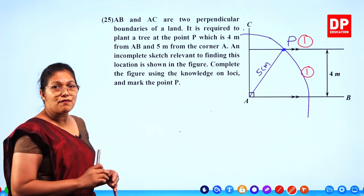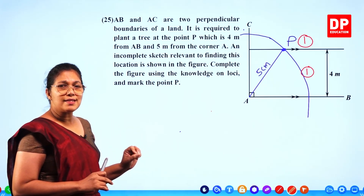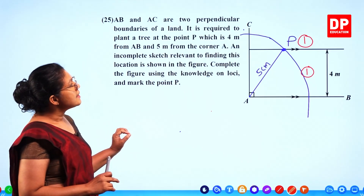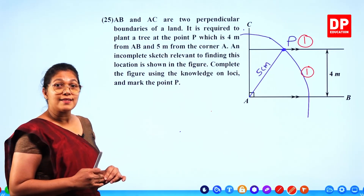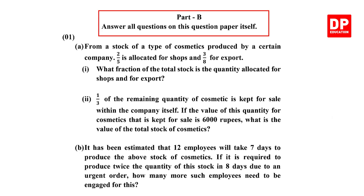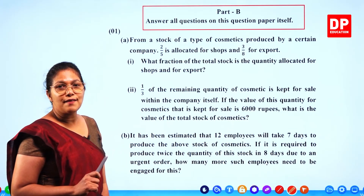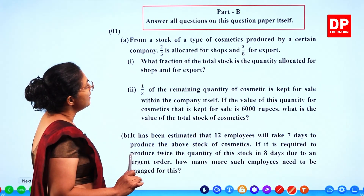We completed all 25 short questions in part A. Try to do all questions within less than one hour, as each question is worth 2 marks. Now let's take part B and answer all questions on the question paper itself within the given spaces.